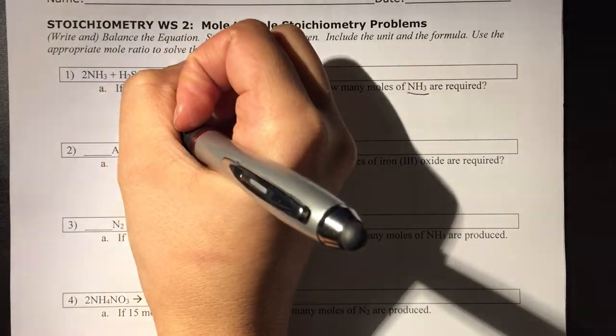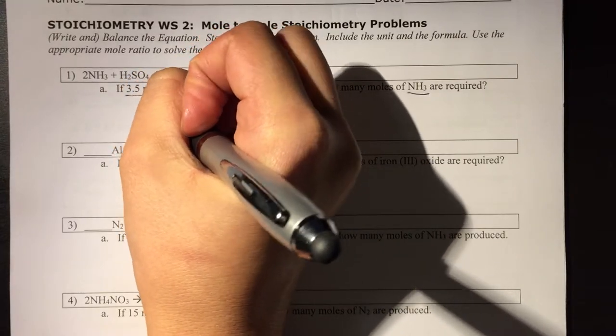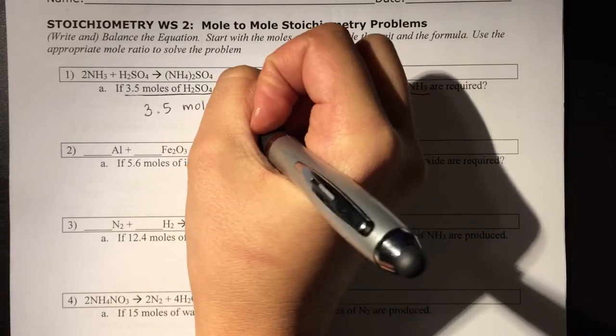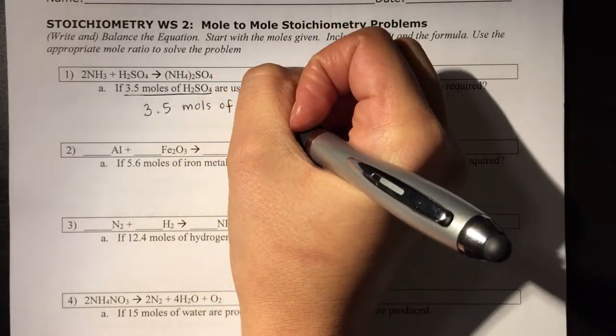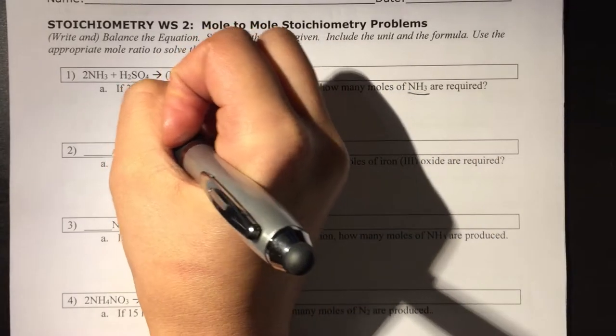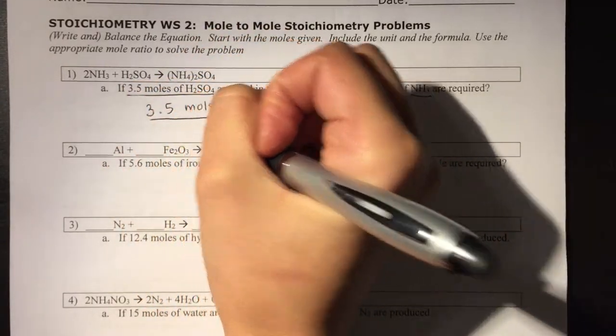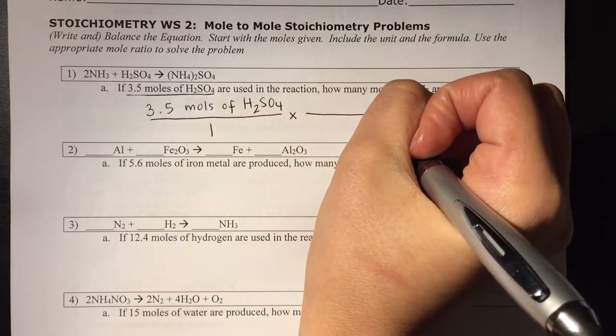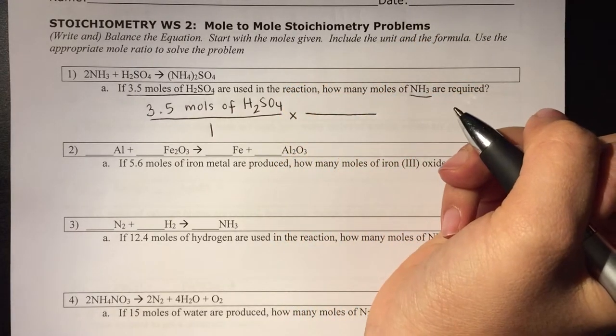So what I'm starting with is 3.5 moles of H2SO4. I'm going to put that over one, and now I need to create the appropriate mole ratio.